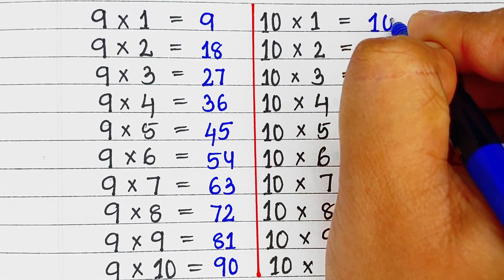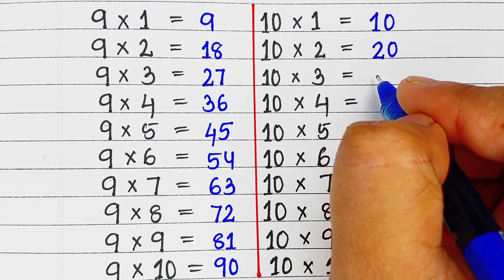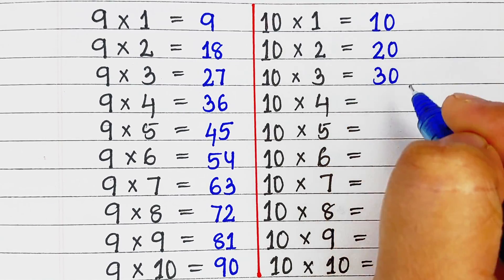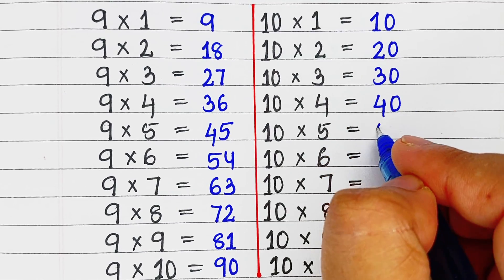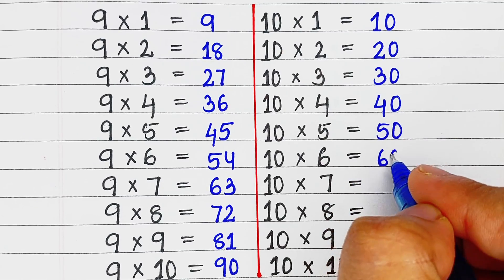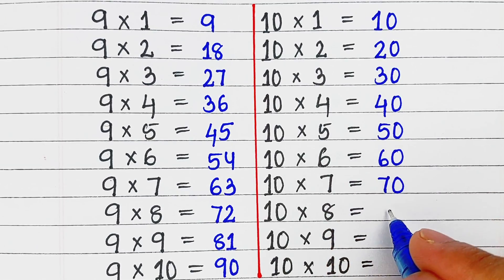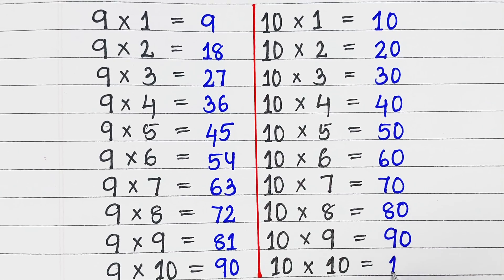Last one, table of 10. 10 ones are 10, 10 twos are 20, 10 threes are 30, 10 fours are 40, 10 fives are 50, 10 sixes are 60, 10 sevens are 70, 10 eights are 80, 10 nines are 90, 10 tens are 100.